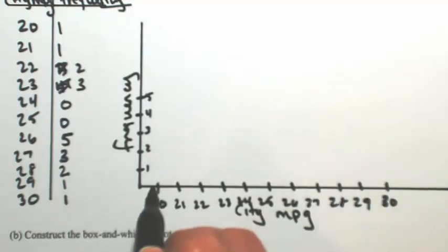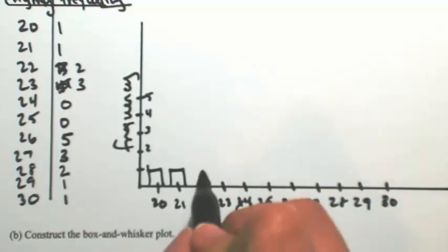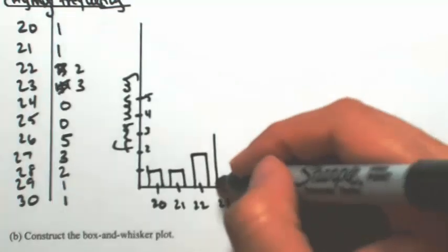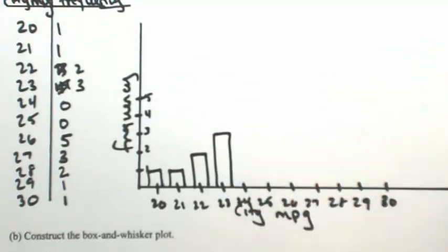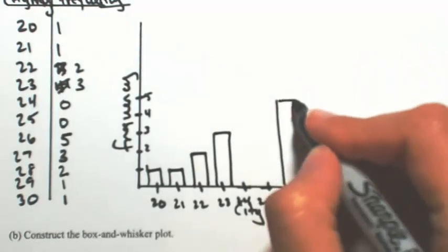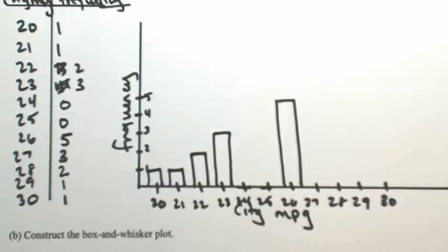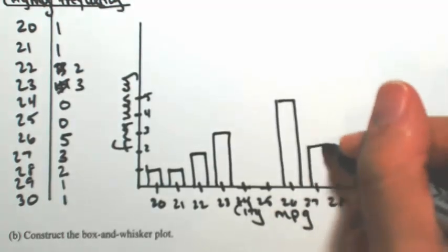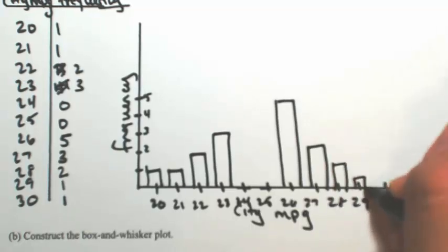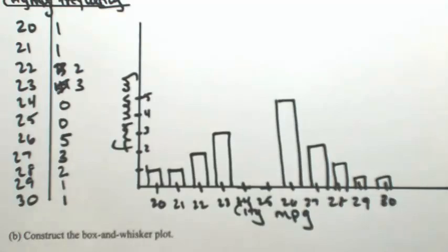Now we're just going to build out bars. At 20 and 21 we're going to have a height of 1. At 22 we have a height of 2. 23 has a height of 3. Nothing at 24. Nothing at 25. 26 has a height of 5. 27 has a height of 3, and then 2, and then 1, and then 1.